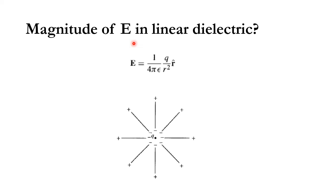In a dielectric medium, the electric field E can be written as E = (1/4πε)(q/r²), replacing ε₀ with ε. This is because ε₀ applies to empty space, while ε applies to the dielectric medium. Since ε = εᵣε₀ and εᵣ > 1, the electric field in the dielectric medium is reduced by a factor of 1/εᵣ compared to free space.